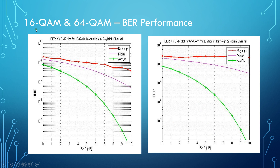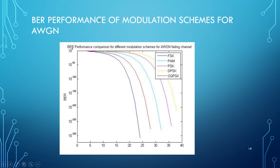The BER performance for 16-QAM and 64-QAM is shown in the two figures. In both figures, it is evident that the Rician fading channel gives better performance when compared to the Rayleigh fading channel. And when all three are compared, AWGN gives a significantly better performance.